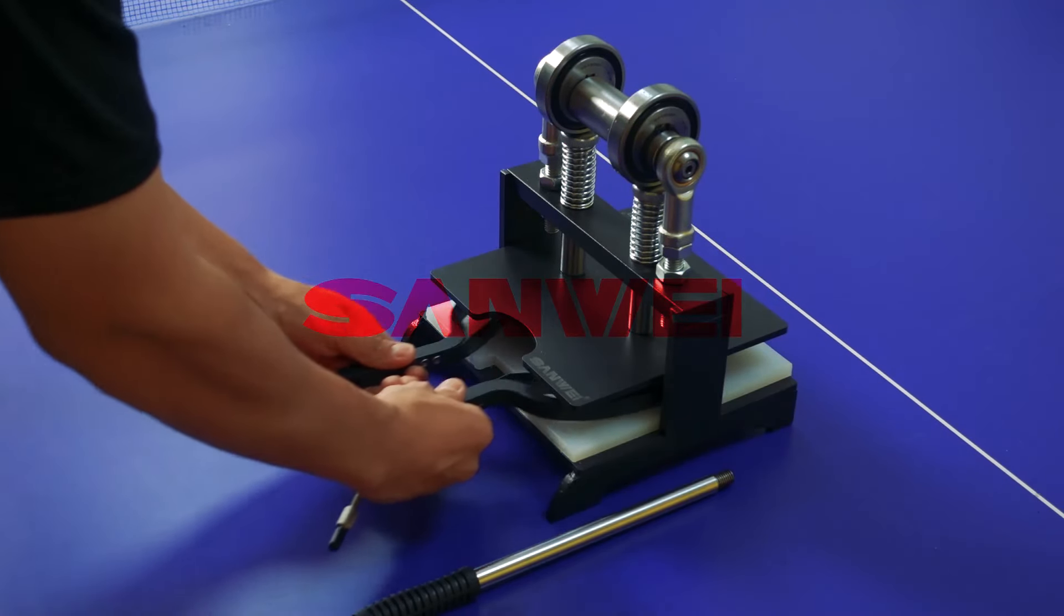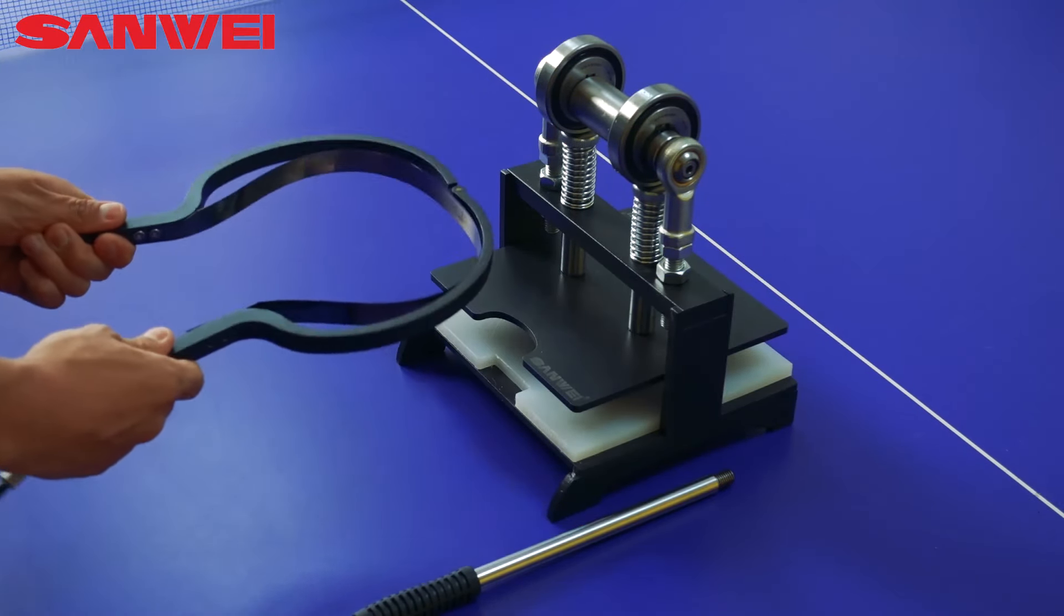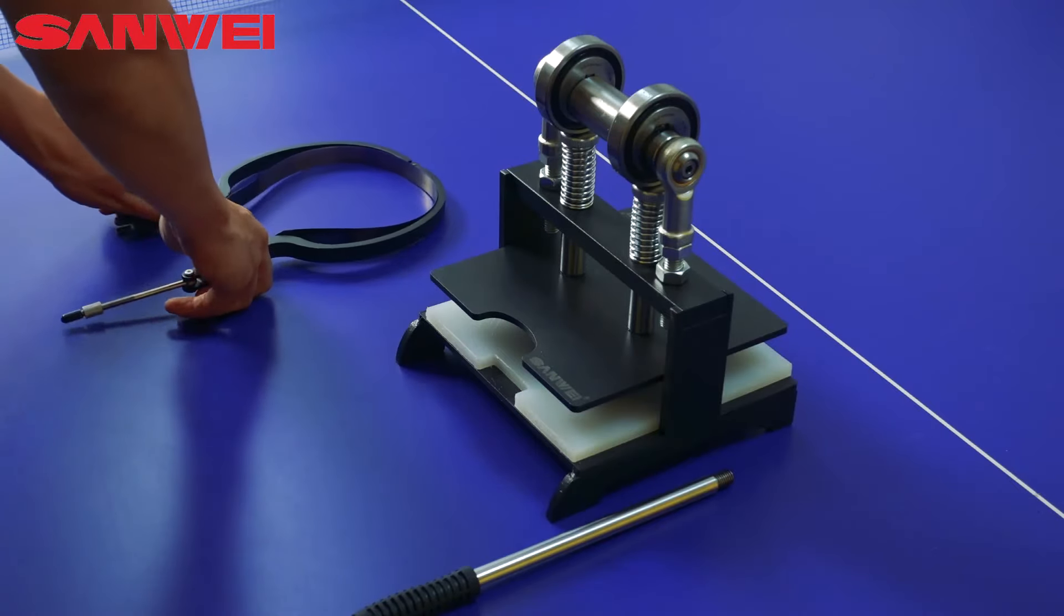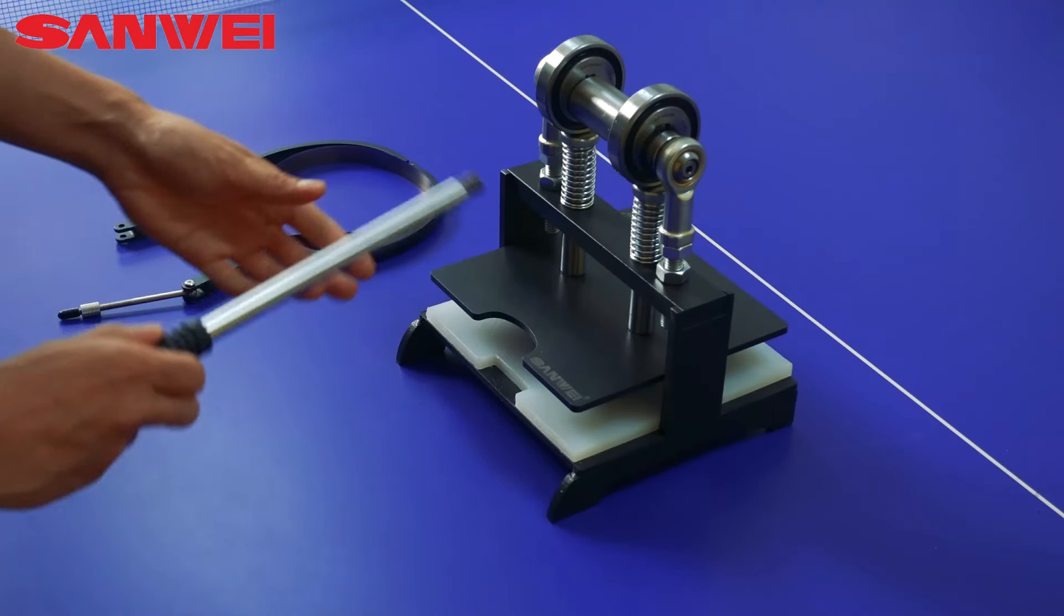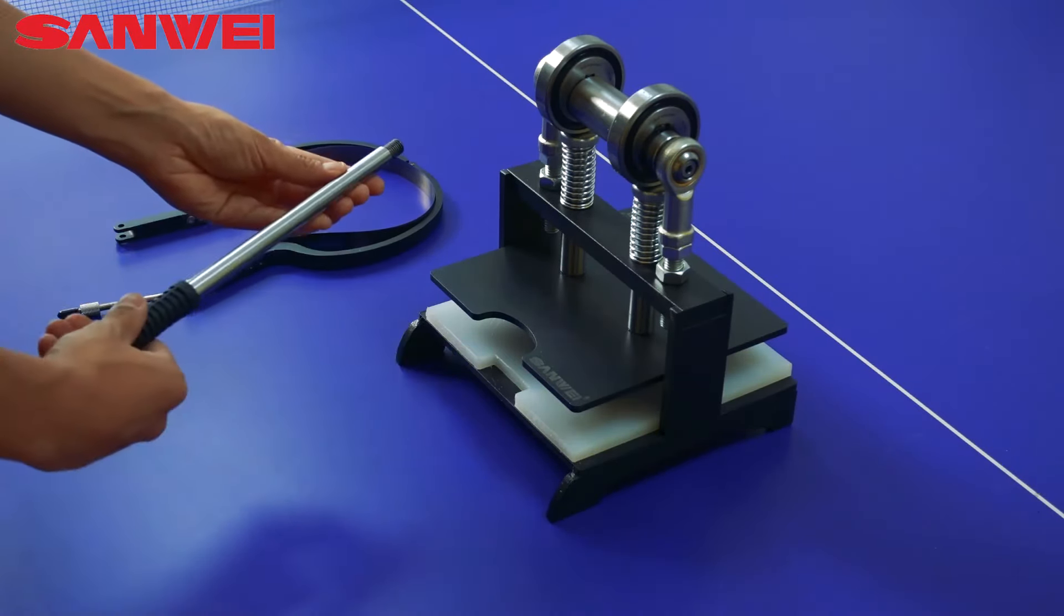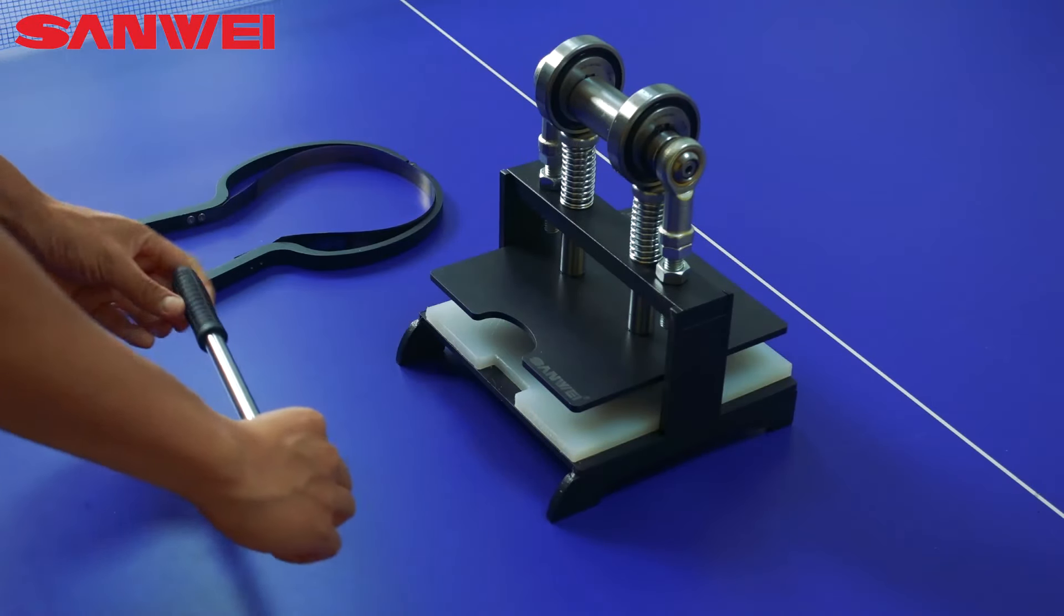How to use Sanway rubber cutting machine? You will easily learn in this video. First, we can see it is composed of a pressing rod, a main machine, and a fixed frame.